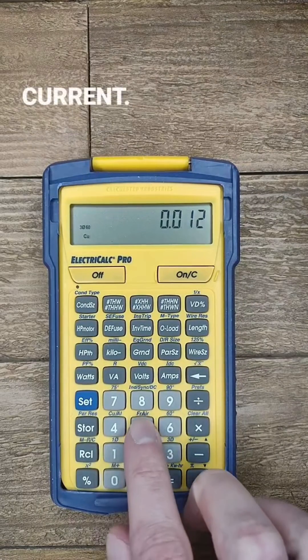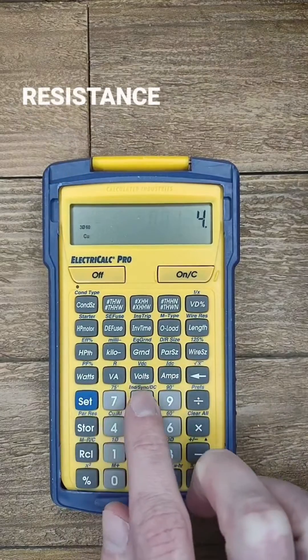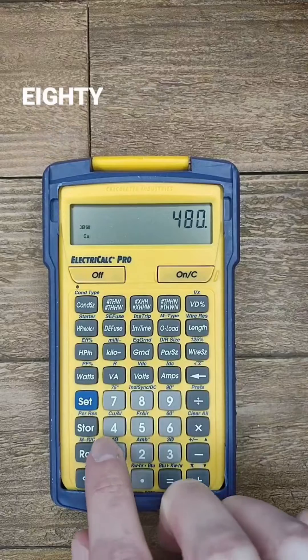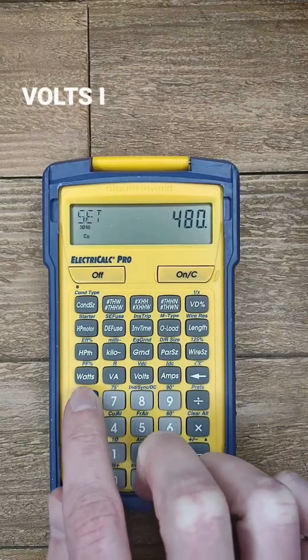First, let's enter current, let's say 0.0125 amps, and resistance at 480 ohms. Now if I push set volts, I get the voltage.